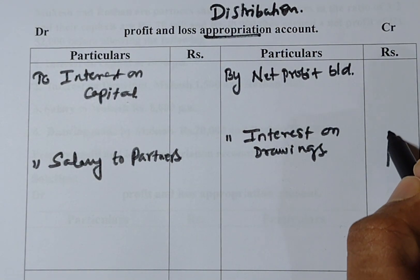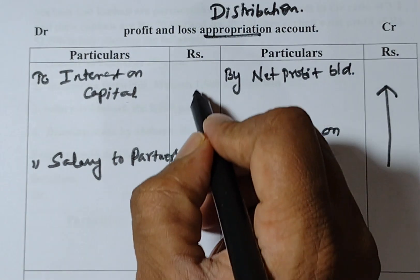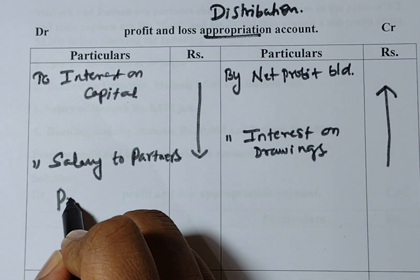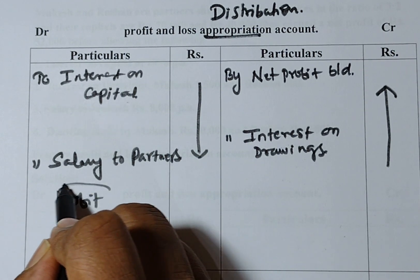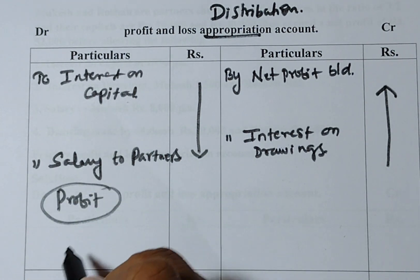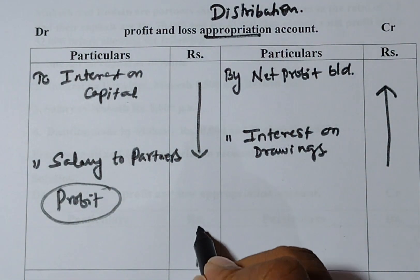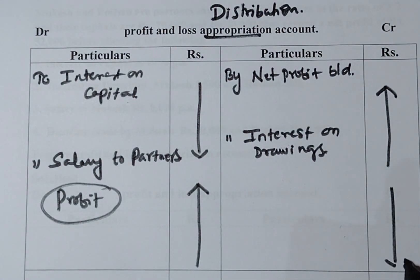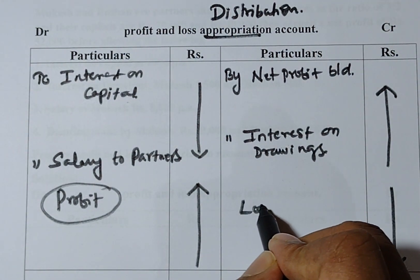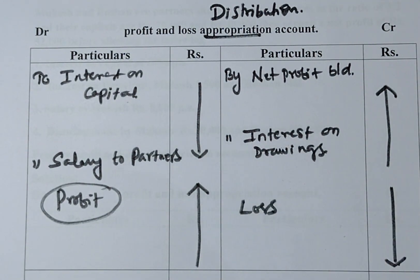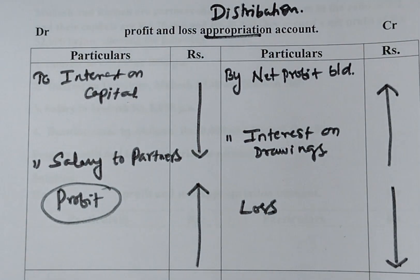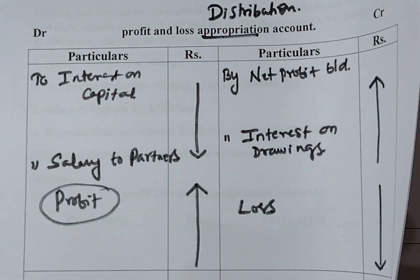If the income is more and expense is less, the answer will be profit. And if the expense is more and the income is less, the answer will be loss. Based on this concept, we are going to do problem number one.